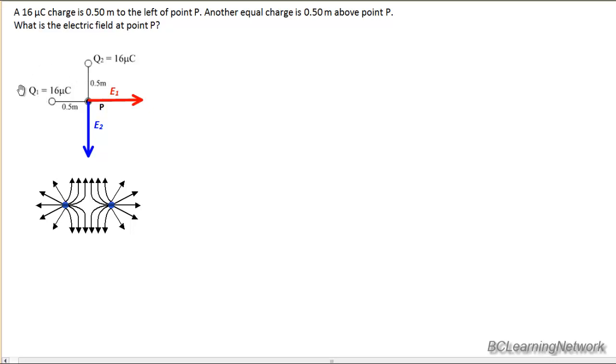Similarly for Q2, if I ignore Q1, E2 will be directly away from Q2. So if I want to find the net electric field for any two vectors like I've drawn here, I need to arrange them tip to tail and determine the overall value.